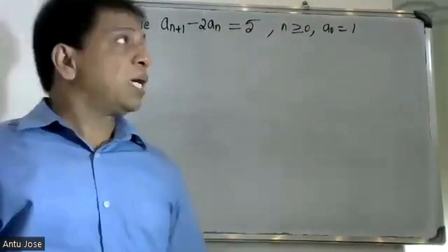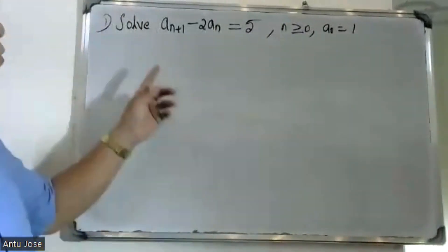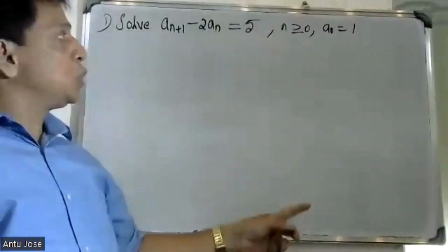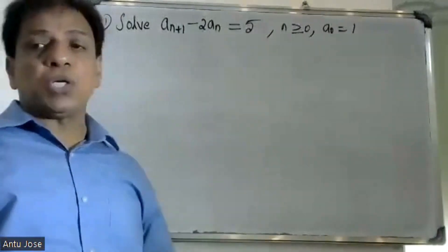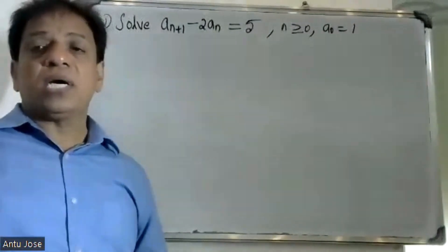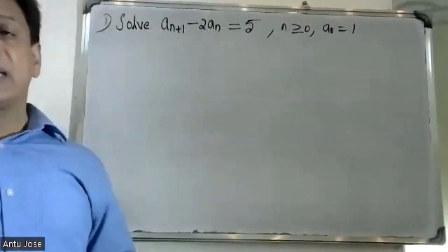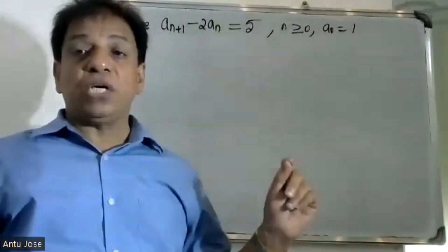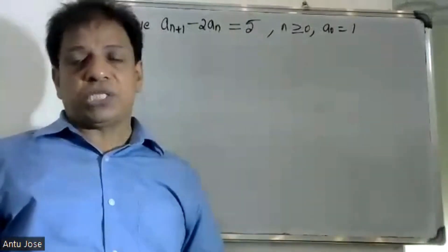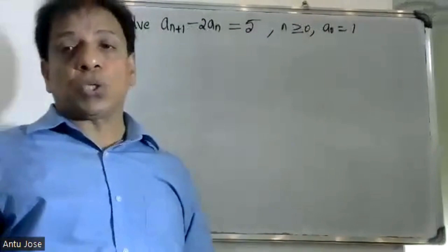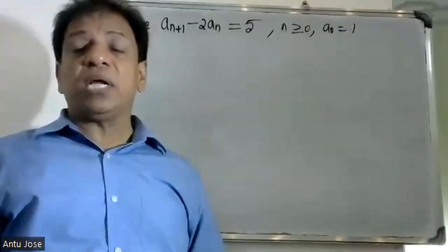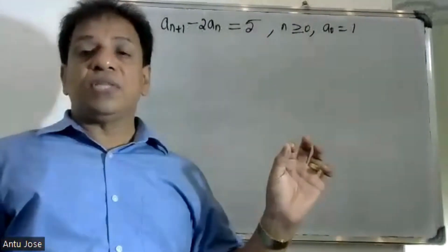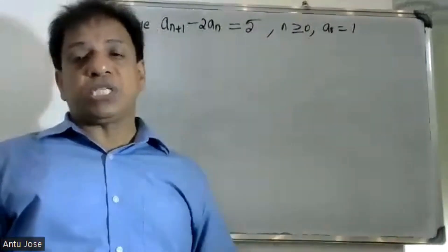Good morning students. The question is: a(n+1) minus 2a(n) equals 5, where n is greater than or equal to 0, and a(0) equals 1. This is a first-order linear recurrence relation with non-homogeneous right-hand side not equal to 0.